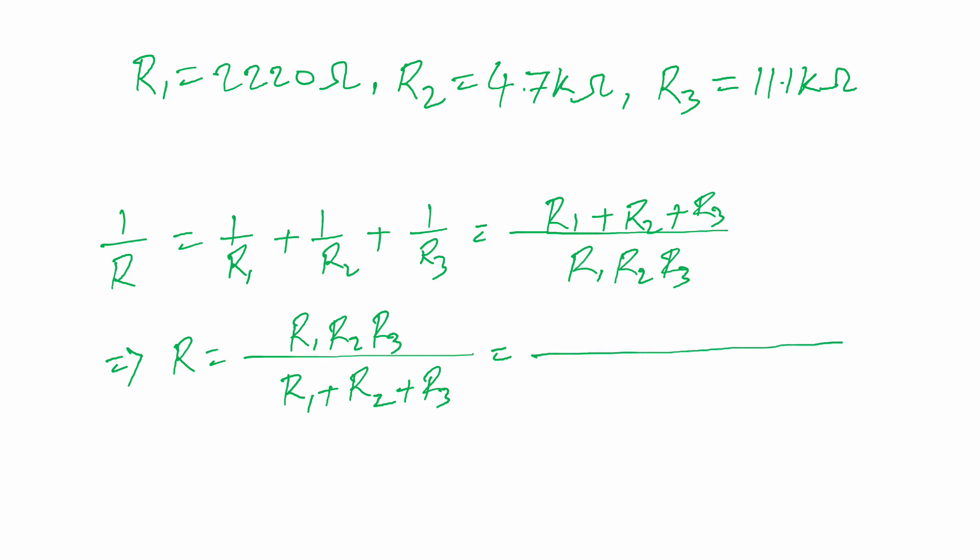Just putting the value now. So R1 is 2.22K. I am just taking only the kilo values. 2.22K times 4.7K times 11.1K. So here is 2.22K plus 4.7K plus 11.1K.